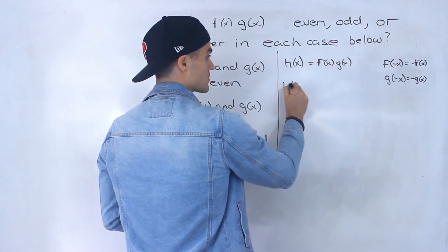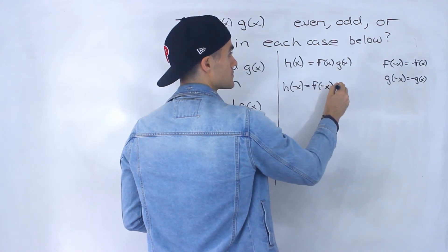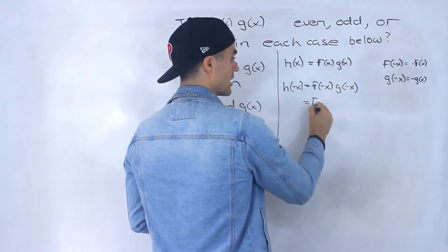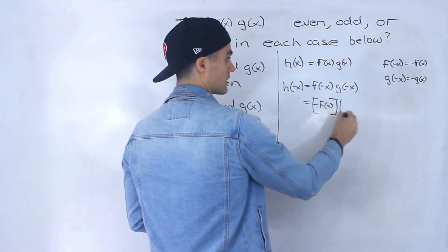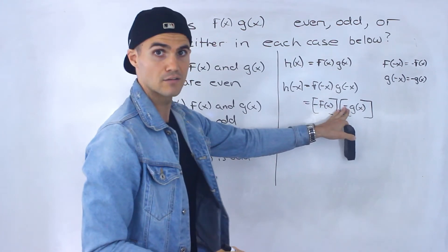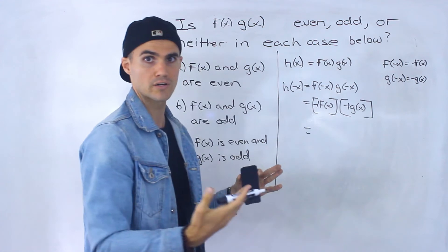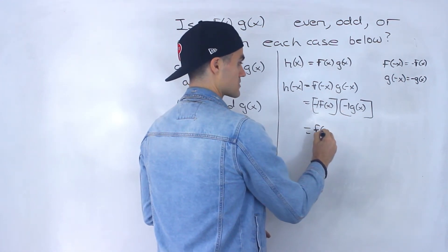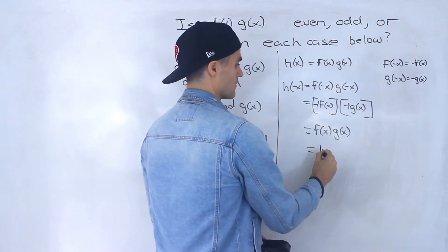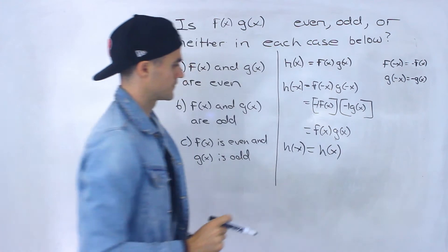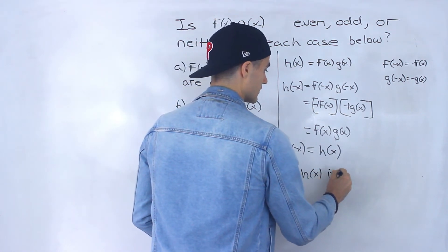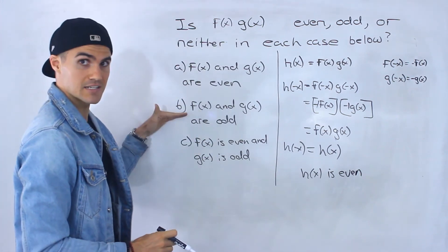Let's figure out what's happening with h(x). h(-x) = f(-x) · g(-x). Plugging in our results: f(-x) is -f(x) and g(-x) is -g(x). Notice the negative times the negative — negative one times negative one is positive one — and we're left with f(x) · g(x), which equals h(x). We've proved h(-x) = h(x), so h(x) is even.